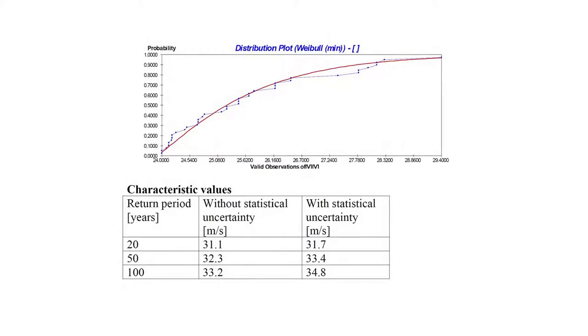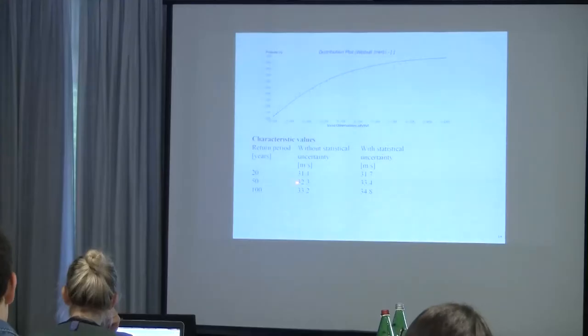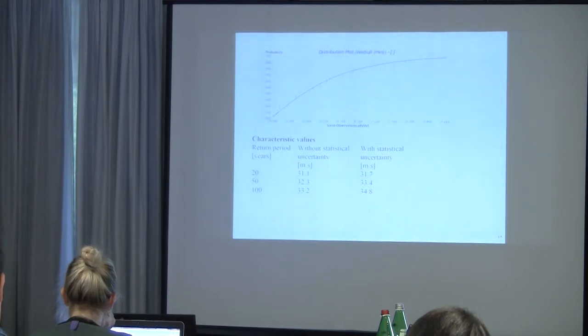If statistical uncertainty is taken into account — using the first-order reliability method — the wind speeds increase slightly for all three return periods. The 50-year wind speed increases from 32.3 to 33.4 m/s. This increase, though not large, is due to uncertainty in the estimated parameters caused by the limited number of data. This is what should be done when estimating, for example, the 50-year wind speed: include the uncertainty on the parameters obtained from the data.